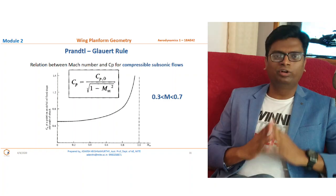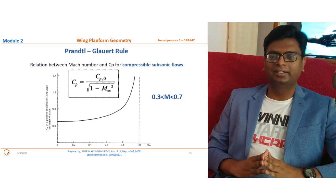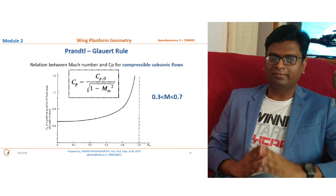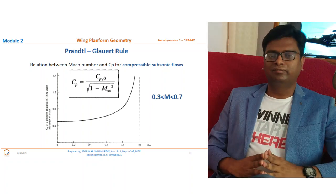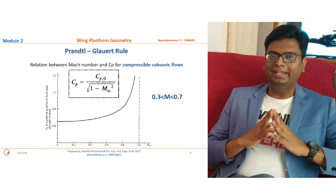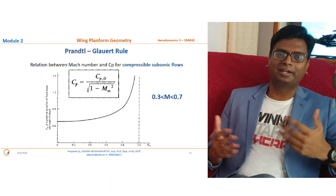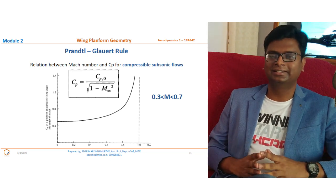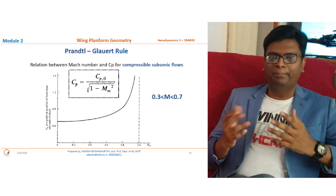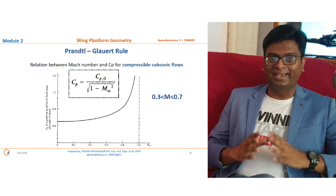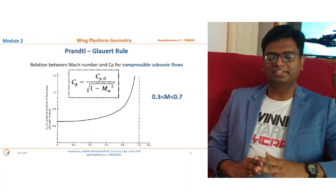If you draw the graph between Mach number and coefficient of pressure, when Mach number is greater than 0.33 and less than roughly 0.7 to 0.8, we are in the compressible range. Below 0.33, the air is considered incompressible. That threshold of 0.33 is a separate analysis we covered in the first module.